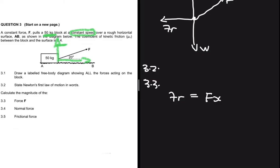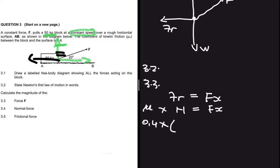The frictional force equals the x-component of the applied force because the applied force has both an x-component and a y-component. We know that frictional force equals the coefficient of friction multiplied by the normal force, which equals the x-component of the applied force. We're given the coefficient of friction as 0.4, so we just need to determine the normal force.